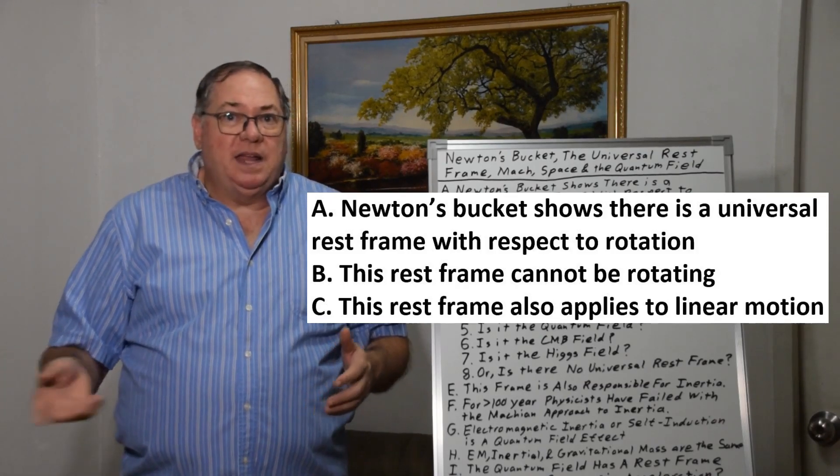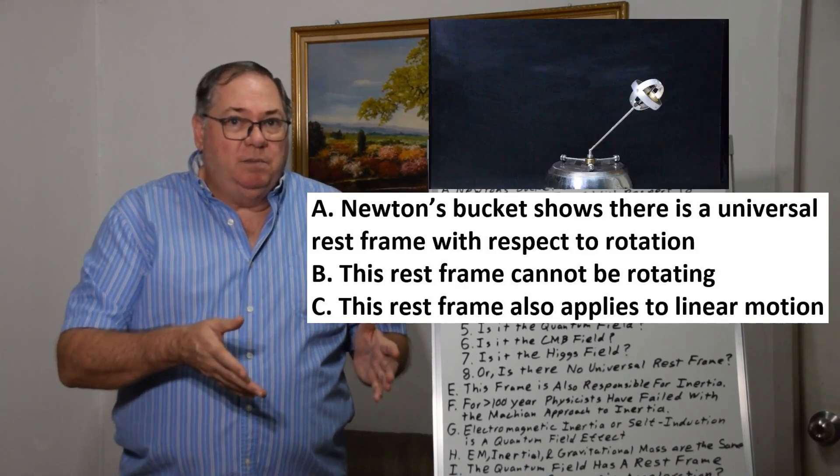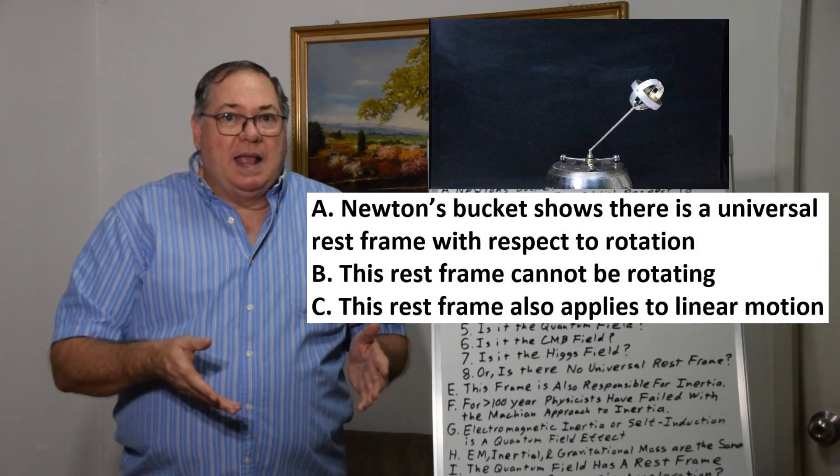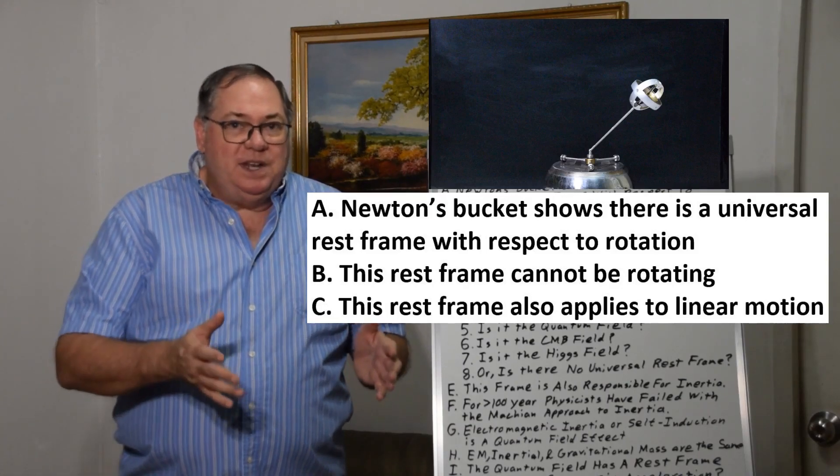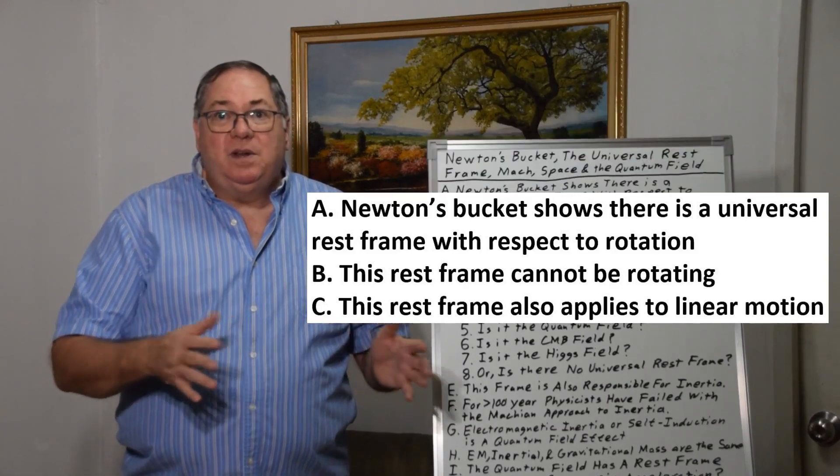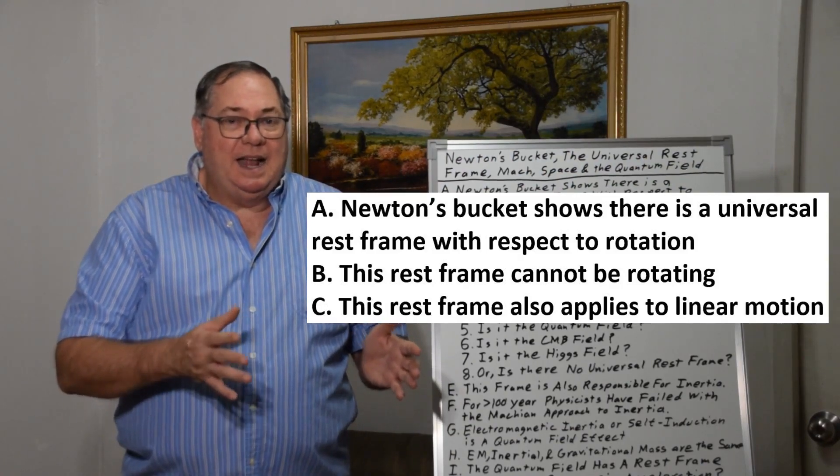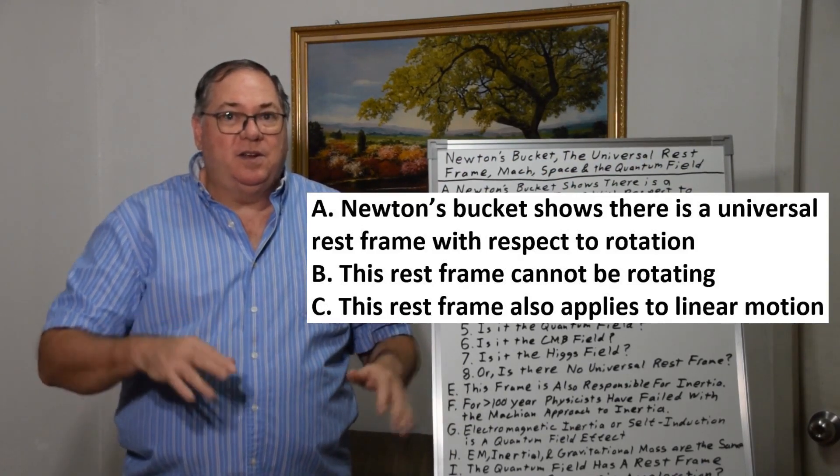And it's not just a bucket. A gyroscope knows when it's rotating. If the water, for example, didn't know it was rotating, it never would curve. There has to be some interaction that identifies that it's rotating, so that the curvature happens.